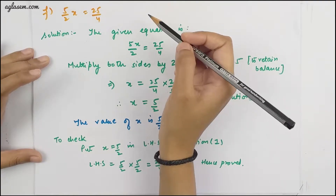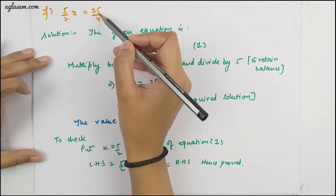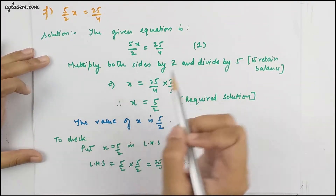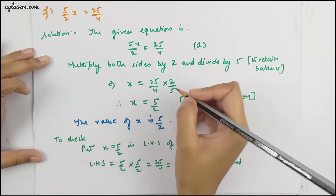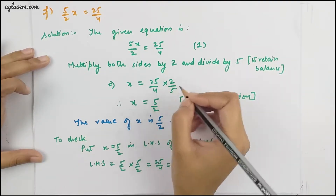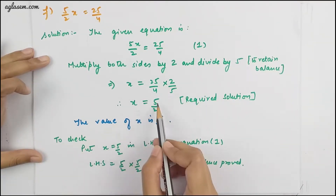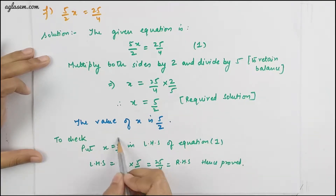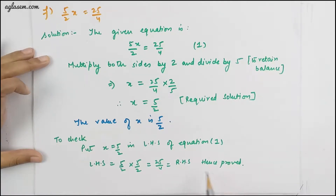The F part is (5/2)x = 25/4. Multiply both sides by 2 and divide by 5 to retain balance. So x = (25/4) × (2/5) = 5/2. To check, put x = 5/2 into the LHS of the equation — that equals the RHS. Hence proved.